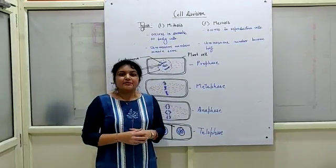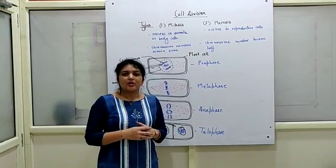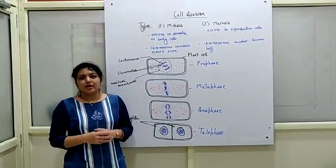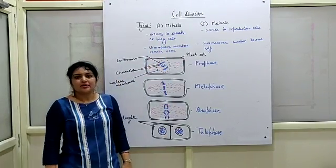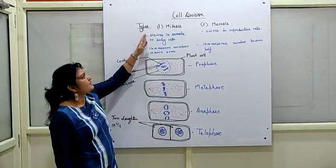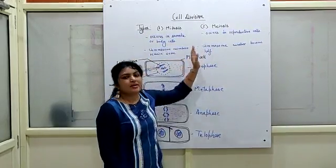There are two types of cell division that occur in all living organisms. The first is mitosis and the other is meiosis.